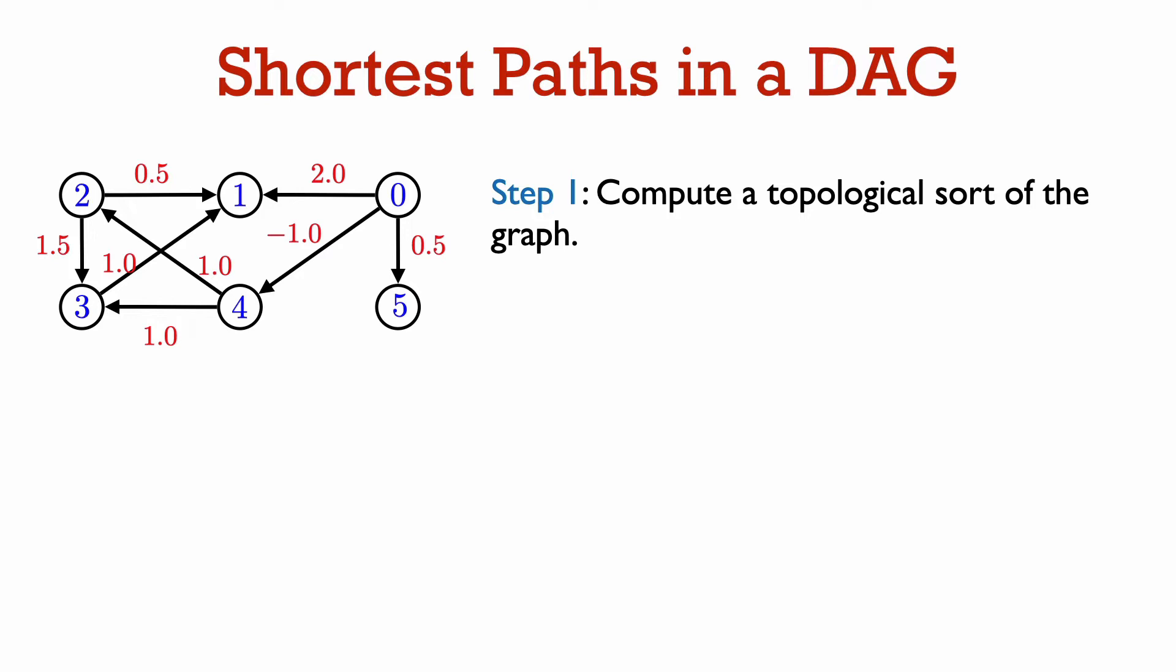The first step of the algorithm is to compute a topological sort of the graph. Recall that this is an ordering of the vertices such that u is less than v in this ordering whenever there is an edge from u to v.